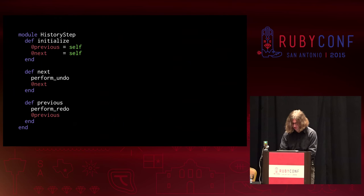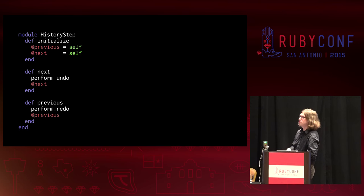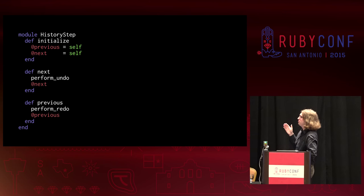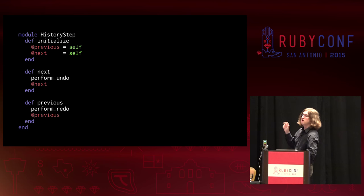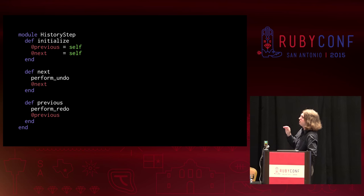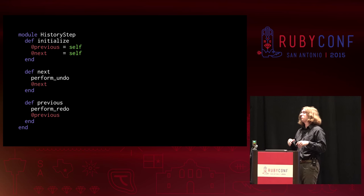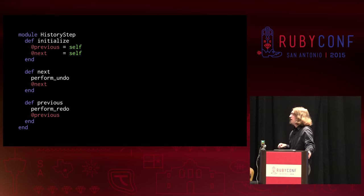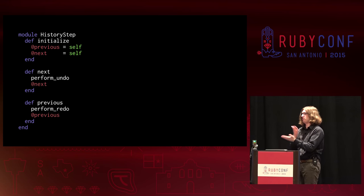To implement this in Ruby is actually relatively simple. We have this HistoryStep module — we don't want to create this as a class, we want to include it elsewhere. We define our initialize method and set the next and previous instance variables to self. We do that because if you're at the beginning or end of the history, or if you only have one item, and you call undo or redo on it, you just want it to loop back to itself — you don't want to pop off the end of the history and return null. The undo and redo operations are defined specific to that particular edit step: for an insertion, undo deletes the text you inserted; redo reinserts it. A delete command is simply the inverse — flip what the undo and redo methods are.